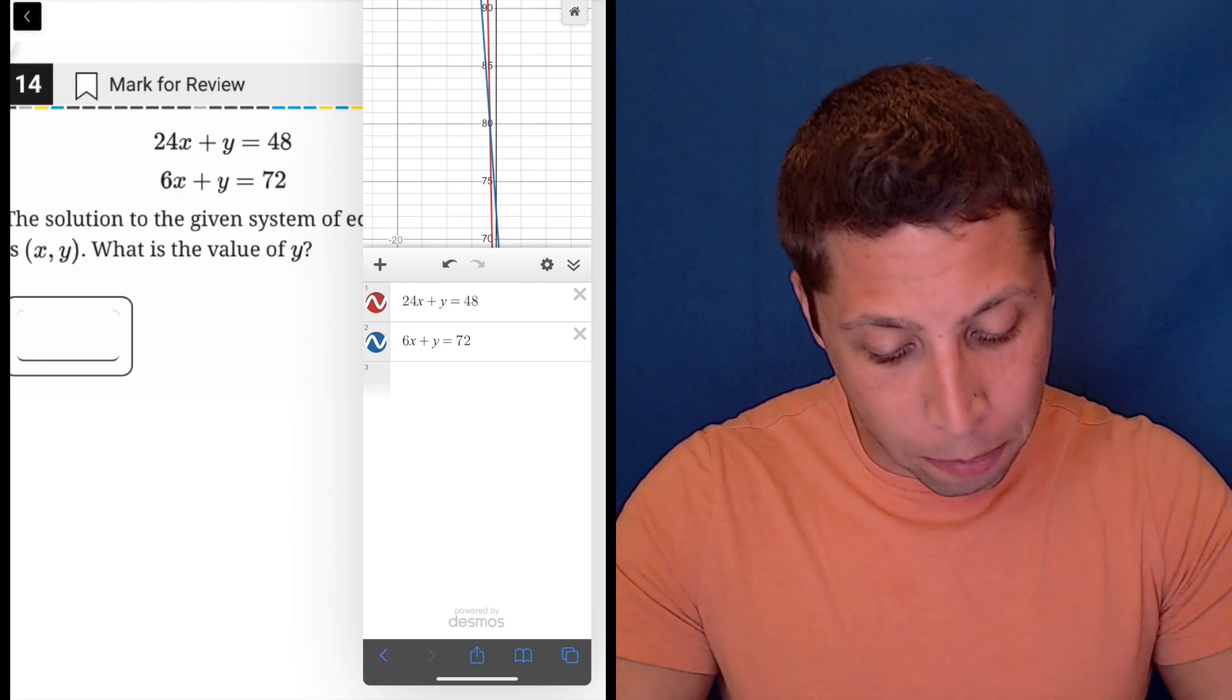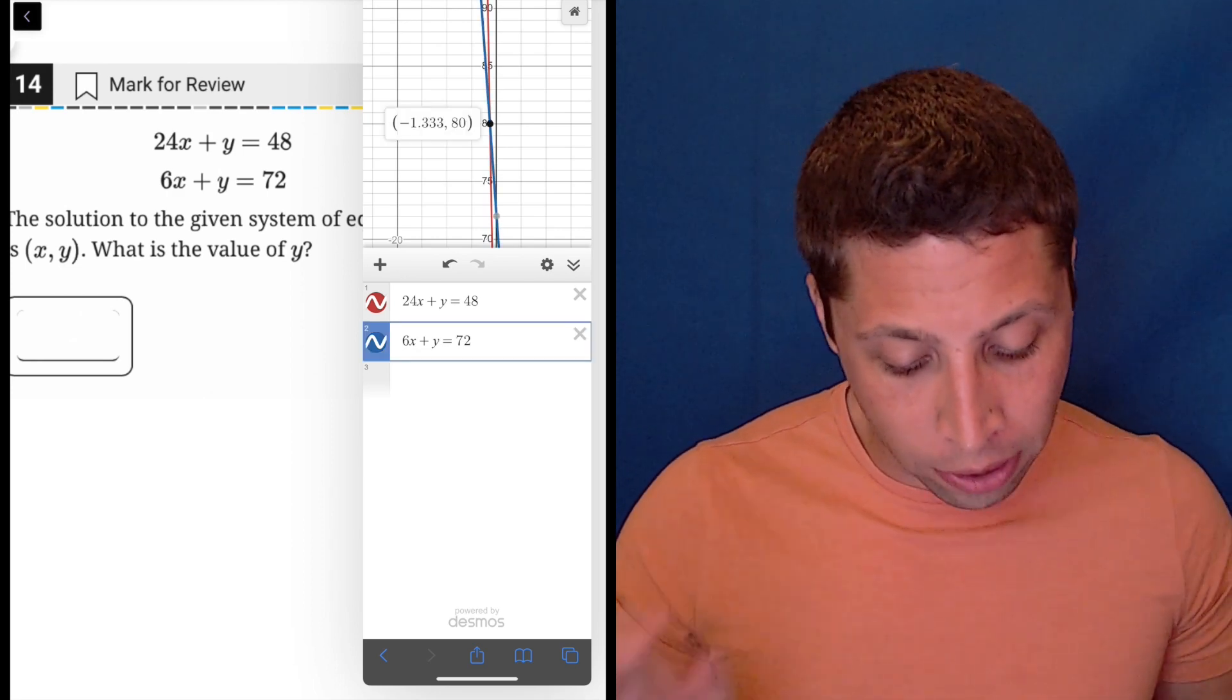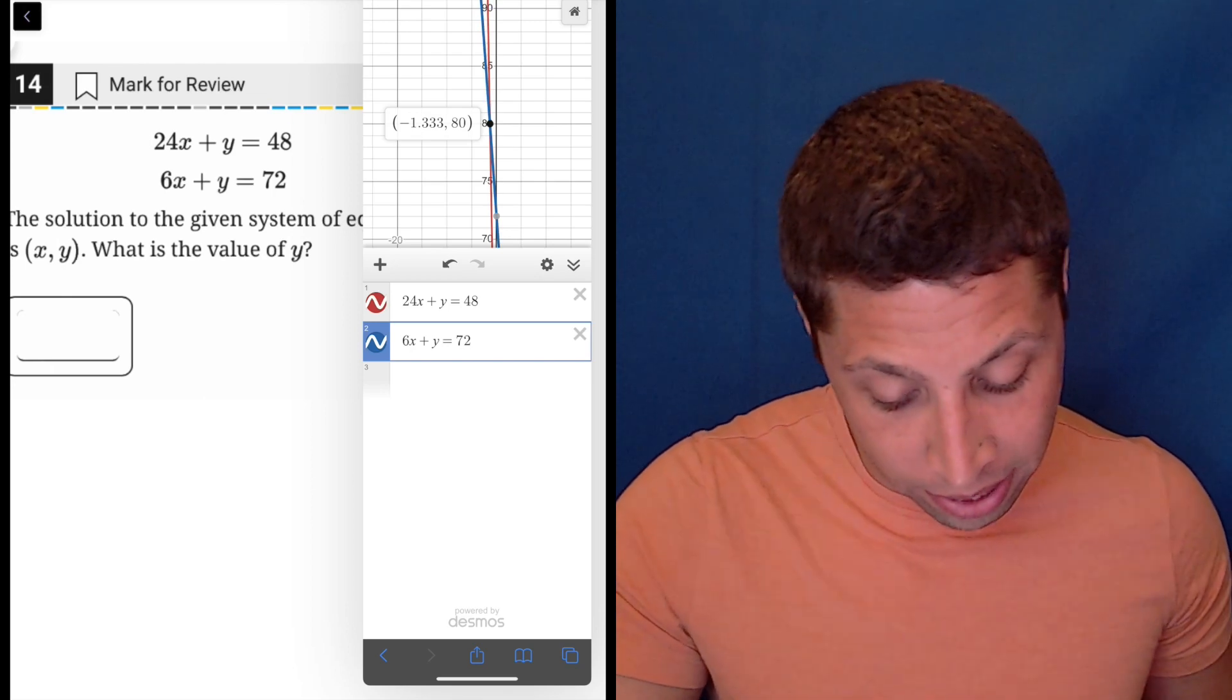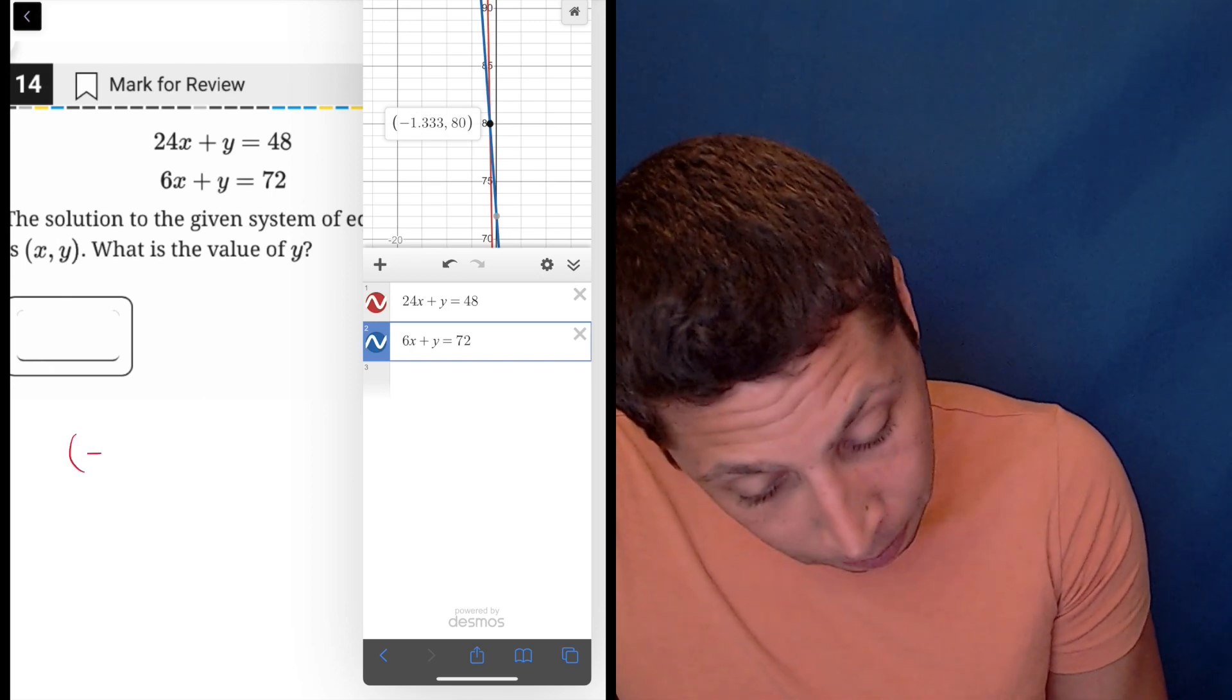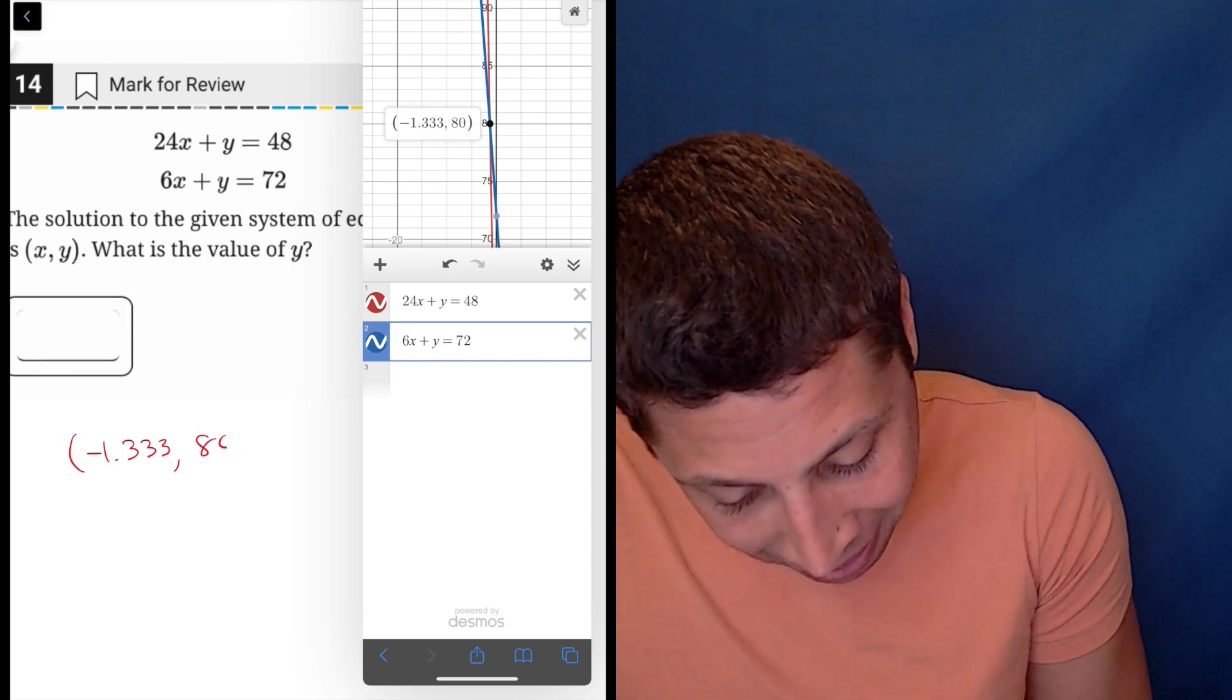So now look, they're really close, but because these are lines, I should be able to just tap it and it's going to tell me the intersection point. So it says negative 1.333 comma 80.